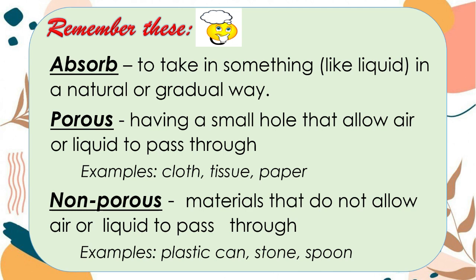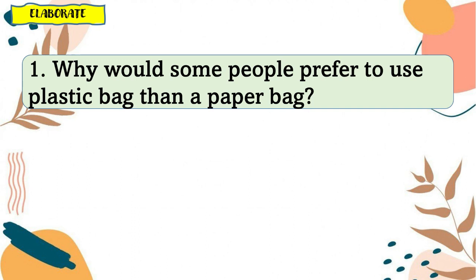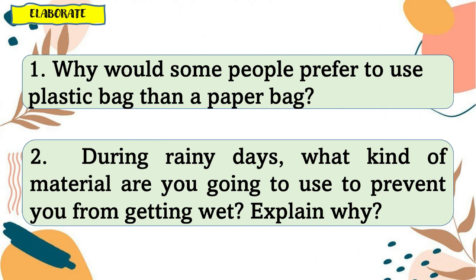Now, can you give me another example? Based on our discussion, let me ask you this question: Why would some people prefer to use a plastic bag than a paper bag? You're right! Paper bags easily get wet unlike a plastic bag, which is a non-porous material that does not allow water to pass through. Next question: During rainy days, what kind of material are you going to use to prevent you from getting wet? That's right! We need to use raincoats to prevent us from getting wet. Plastic raincoats do not absorb water — plastic does not allow water to pass through.